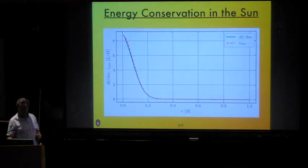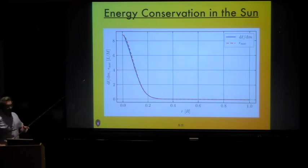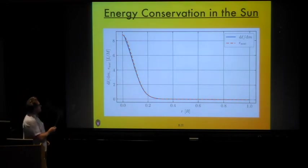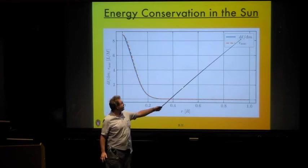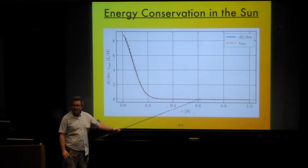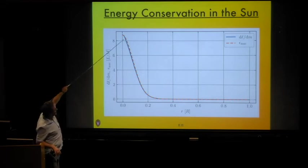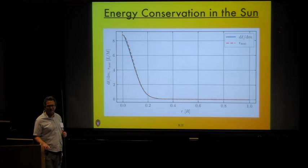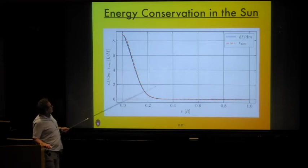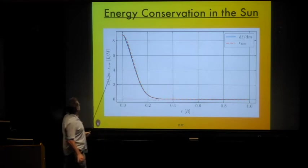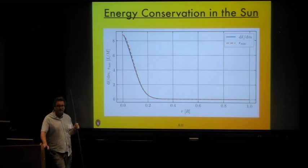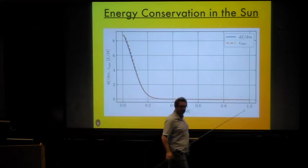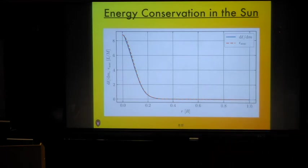Looking at thermal equilibrium in the Sun: I'm plotting the gradient of internal luminosity with respect to mass and the nuclear energy release rate as a function of radius in a model for the present-day Sun. The two curves should lie on top of each other — small discrepancies are due to numerical precision in Python. The key takeaway is seeing where ε_nuc is large: in the core of the Sun, roughly the inner 20% by radius, almost all of the nuclear energy is being generated. There's almost no energy generated in the rest of the Sun, because the temperatures aren't high enough for nuclear reactions. For hydrogen-burning reactions, you need to be above maybe 5 to 10 million Kelvin.